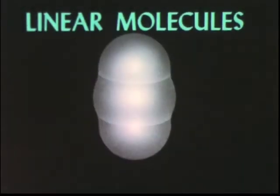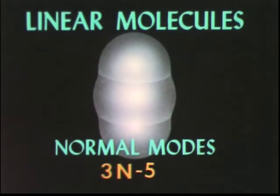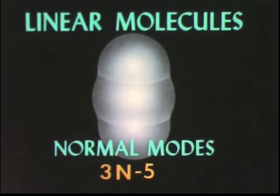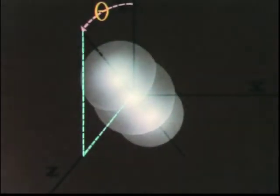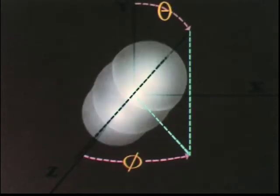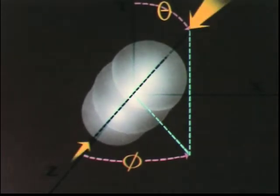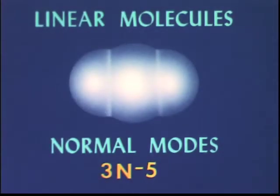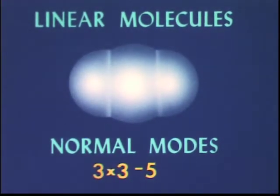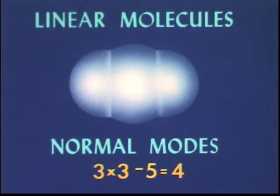For any linear molecule, such as this one of carbon dioxide, the formula for the number of normal modes becomes three n minus five, because only two angles are necessary to specify its orientation in space: one, two. The third angle is unnecessary because neither infrared light nor ordinary collisions impart any rotation around the long axis of a linear molecule. This means that the vibrations of carbon dioxide can be resolved into four normal modes.